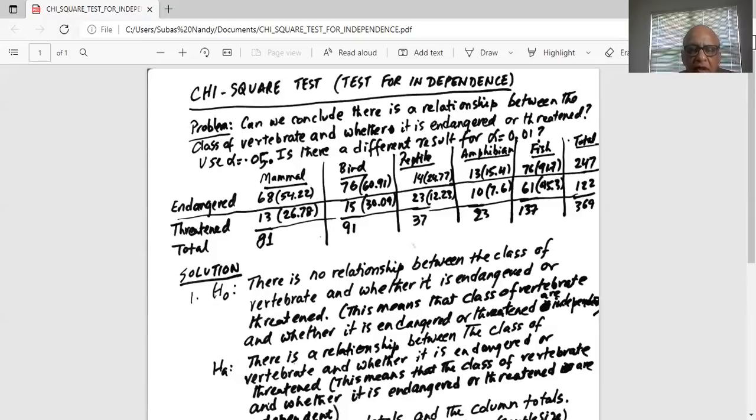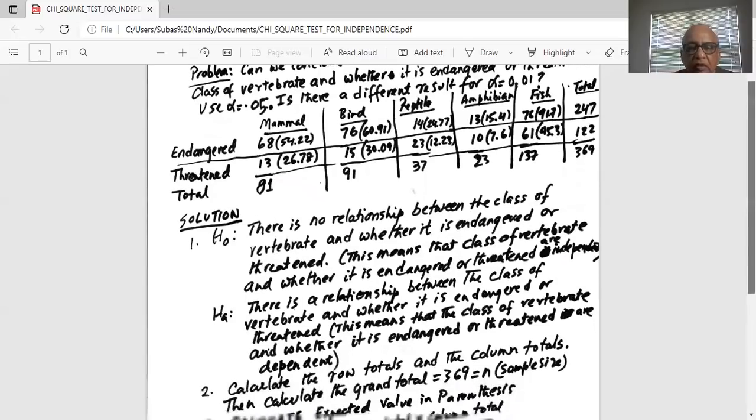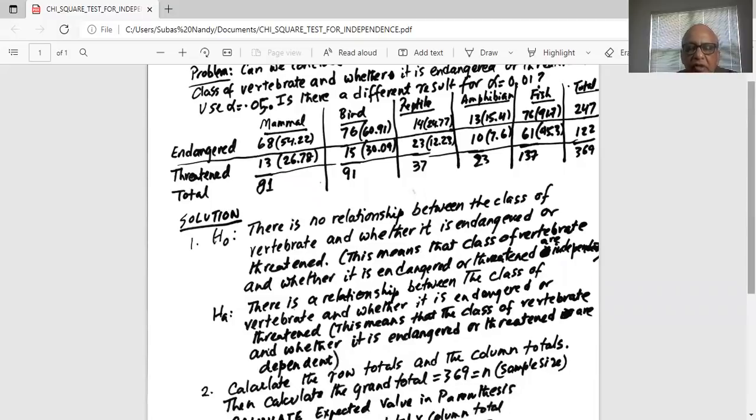Null hypothesis: There is no relationship between the class of vertebrate and whether it is endangered or threatened. This means that the class of vertebrate and whether it is endangered or threatened, they're dependent.